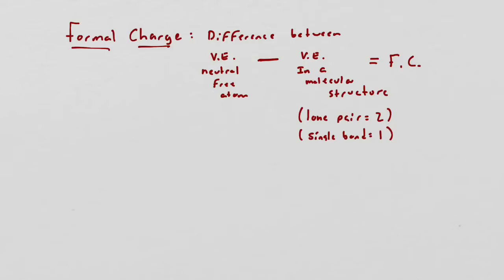This video is on using something called formal charge to evaluate molecular structures, particularly when there's more than one plausible Lewis structure that meets the octet rule and conceivably could be stable. When you're looking at a structure, the second part can be difficult.